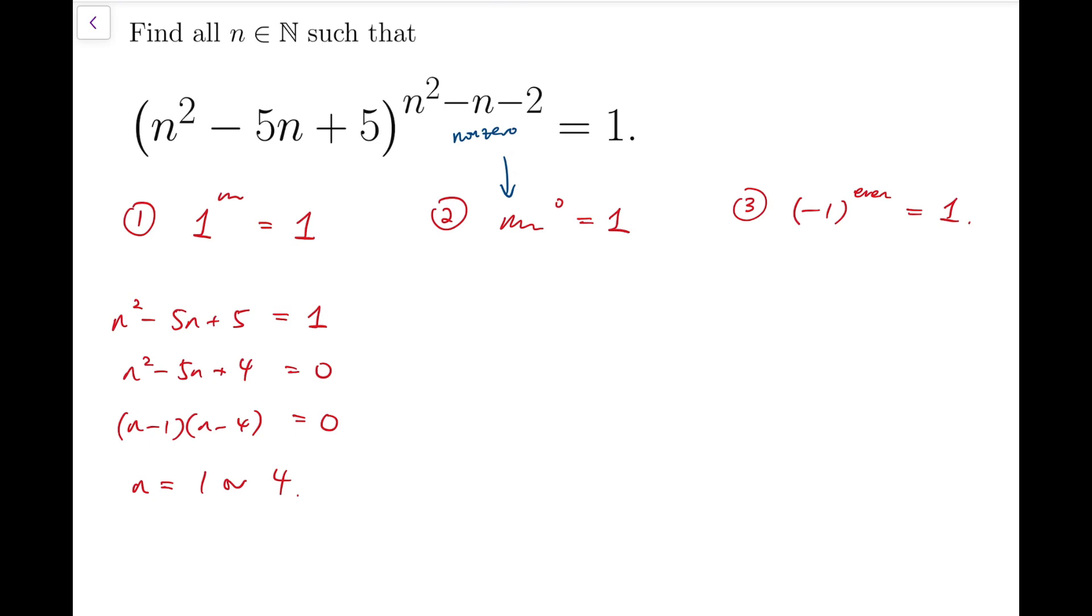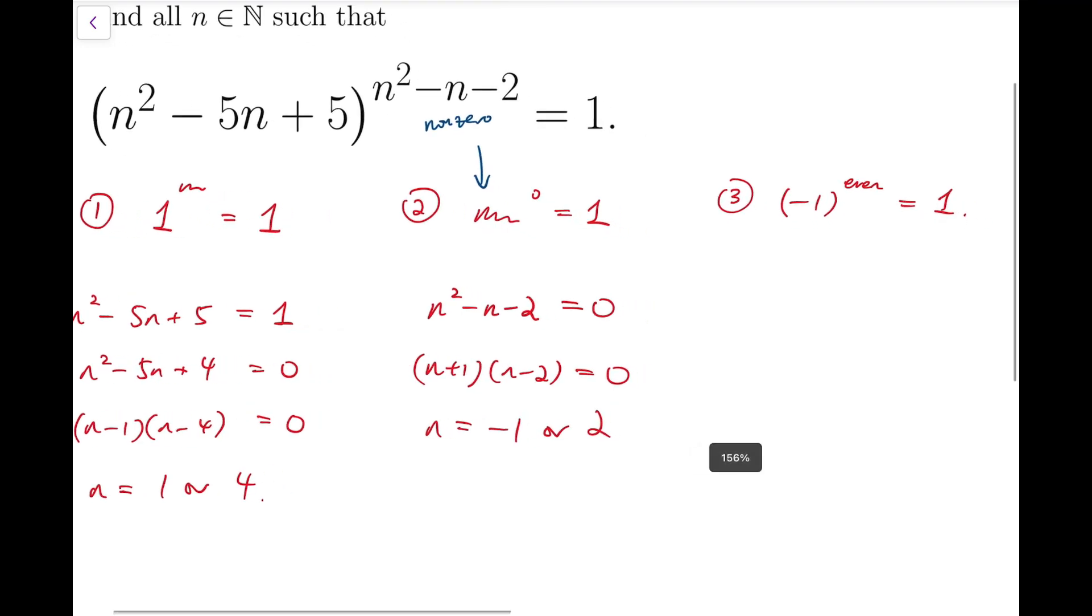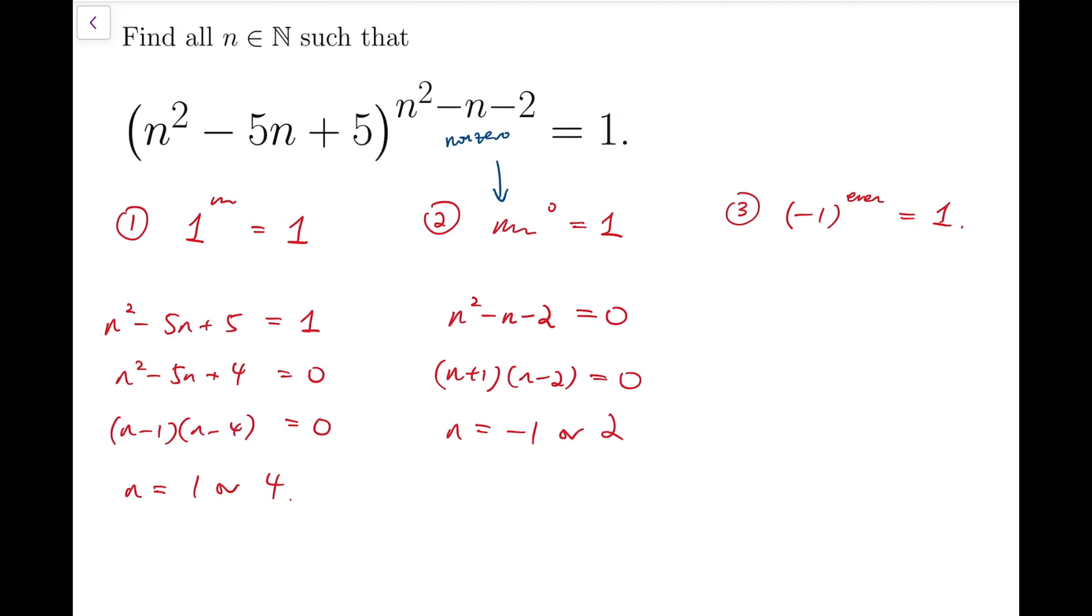Now for the second case, because we want the index to be 0, so that means n squared minus n minus 2 equals 0. Then we can factorize again and realize that n has to be minus 1 or 2. Now for this case, we'll notice that n squared minus 5n plus 5 has no integral solution. So in particular, no matter whether you put minus 1 or 2 into this part, you will not get 0. So we're all good.